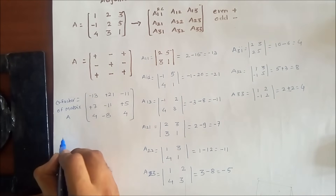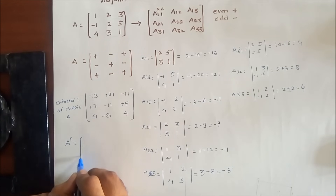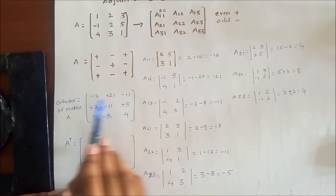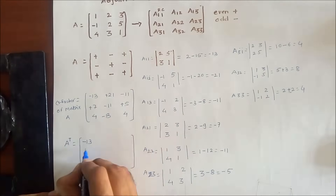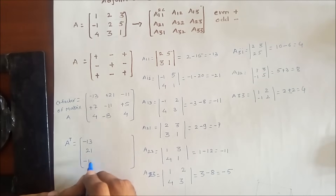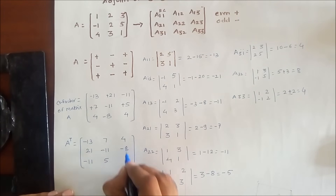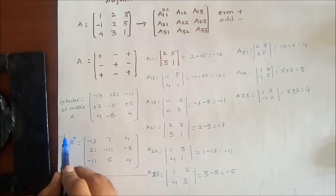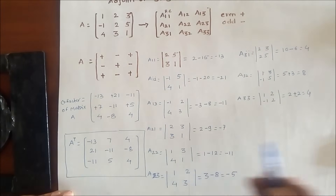Now we have to take the transpose of those cofactors. In the transpose, what we are going to do is change the rows into columns. Then we get the first row becoming the first column: -13, 21, -11; then 7, -11, 5; then 4, -8, 4. This is the adjoint of that matrix.